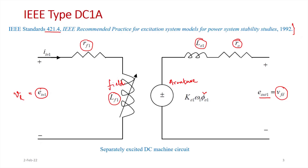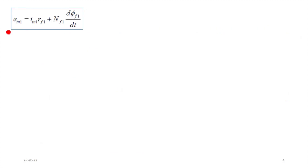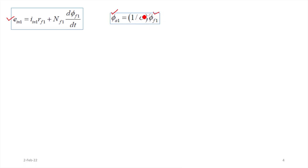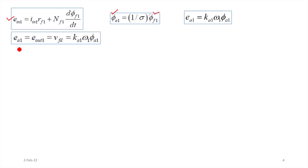For this separately excited machine, we write the field circuit equation first. In the time domain: e_n1 = i_n1·rf1 + nf1·(d/dt)φf1. Now φa1, the flux linkage in the armature winding, is a fraction of the flux produced by the field winding φf1. So φa1 = (1/σ)·φf1. Therefore the induced EMF ea1 = ka1·ω1·φa1, and ea1 = e_out1 = v_fd approximately.